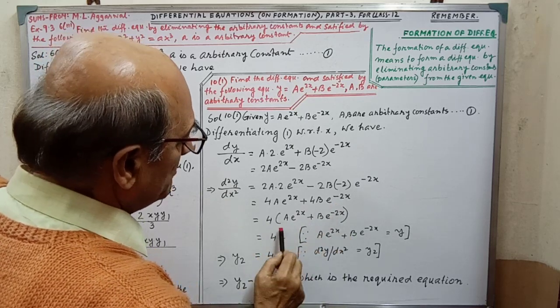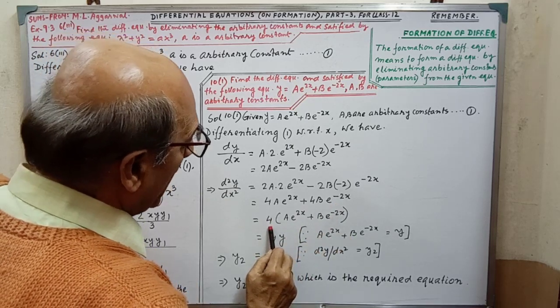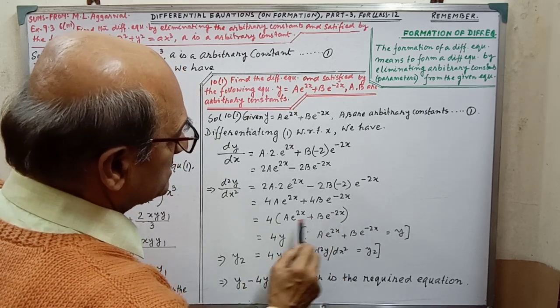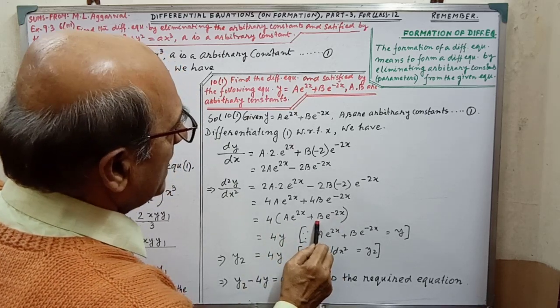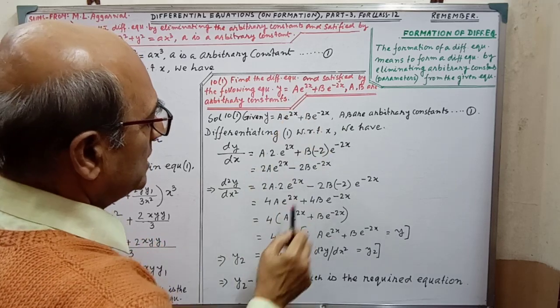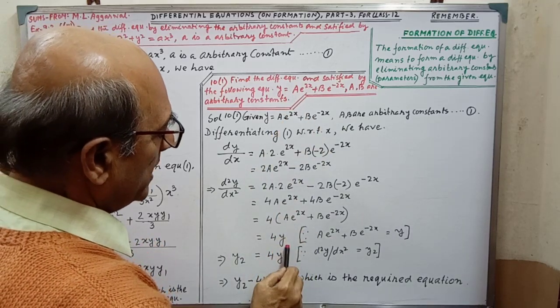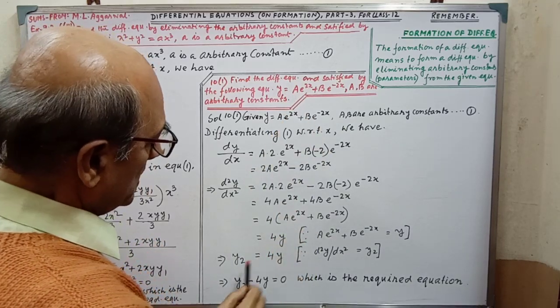Then, by simplification, by taking common 4, we are getting this. This expression exactly the value of y. So, in place of this, we are writing 4y.